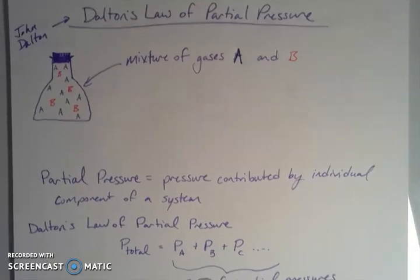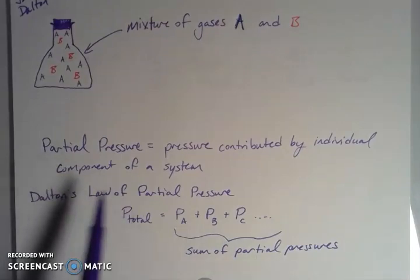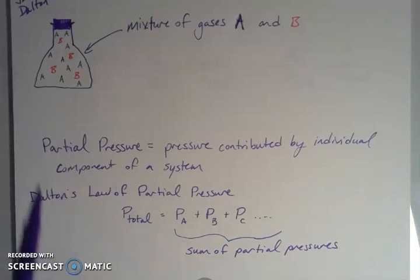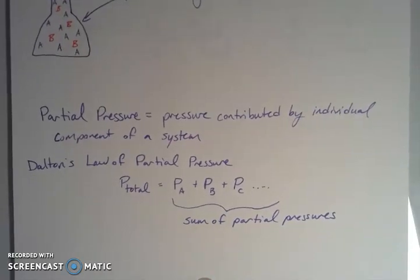And what we're talking about when we're talking about an individual component's impact on the total system is what is called partial pressure. So the partial pressure of a gas is the pressure that is contributed by that particular component. So I can talk about the partial pressure of gas A and the partial pressure of gas B. And what Dalton said is, when I take the sum of those partial pressures for all of the gases in my system, then that will give me the total pressure. So it's just a sum.